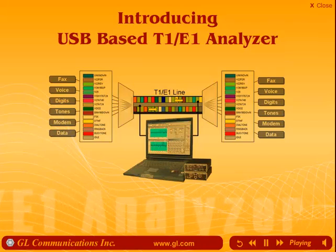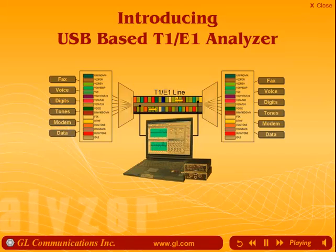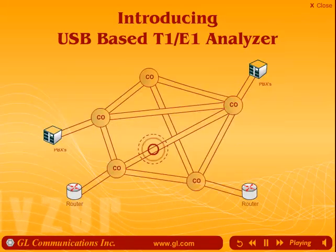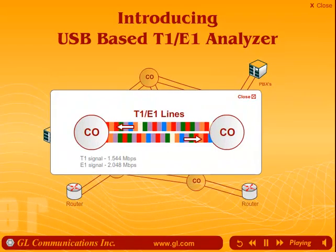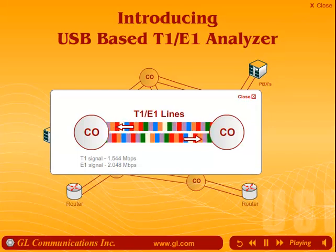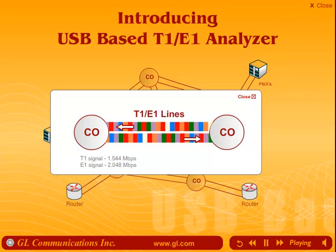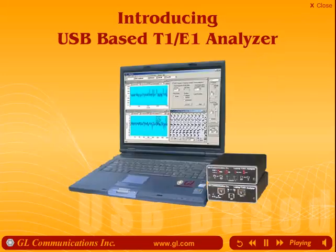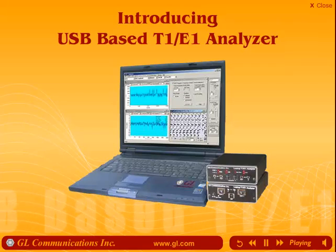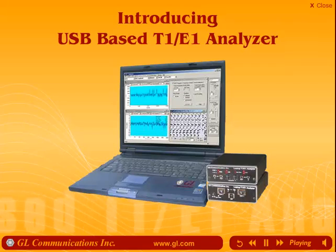First, the USB 2.0 interface to the PC allows high-speed access to T1E1 lines. That means the full 1.544 Mbps T1 signal or the 2.048 Mbps E1 signal, and on both ports, no less. Second, you can use the power, portability, and user-friendliness of a notebook PC to control and analyze T1E1 traffic.